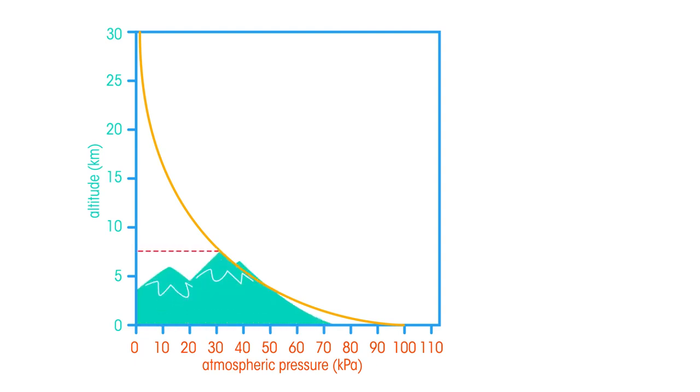This is why the air in the mountains is thinner, and sometimes mountain climbers need oxygen to breathe. In fact, the pressure at the top of Mount Everest is less than 30% of the pressure at sea level.